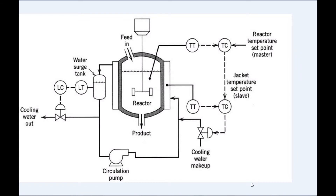In this session we are going to design this process in WinCC SCADA. Here you can find the reactor, circulation pump, and surge tank, some control valves, and two controllers because this is a cascade control system, which has two closed loops — a secondary loop and a primary loop. There is also an indicator, and the reactor has a stirrer motor with one inlet and one outlet.